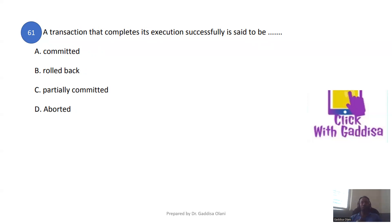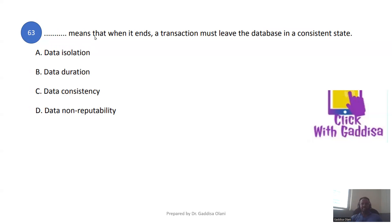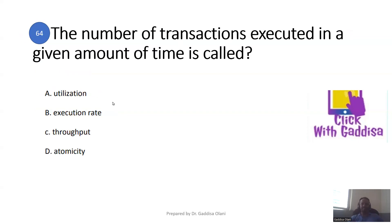Transactions that complete execution successfully are said to be committed. If cancelled, they are rolled back. Atomicity means a transaction must execute exactly once, completely or not at all — all or none. Consistency means the transaction must leave the database in a consistent state. The number of transactions executed in a given amount of time is called throughput.